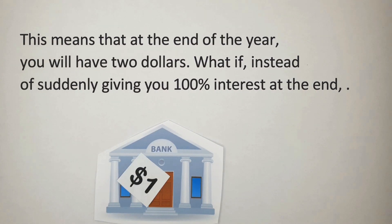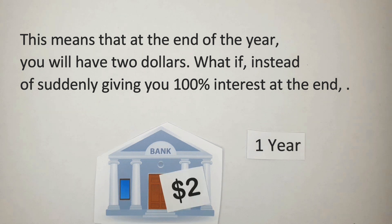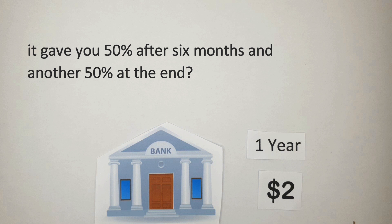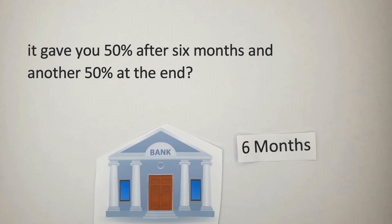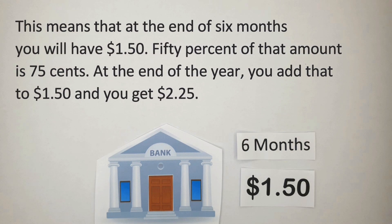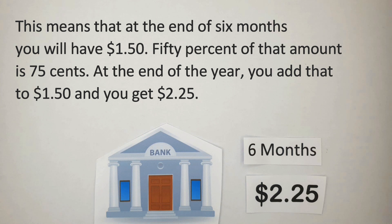We need banks like that! This means that at the end of the year you will have $2. But what if, instead of suddenly giving you 100% interest at the end, it gave you 50% after 6 months and another 50% at the end? At the end of 6 months you will have $1.50. 50% of that amount is 75 cents, so at the end of the year you add that to $1.50 and you get $2.25.